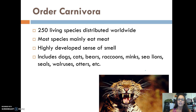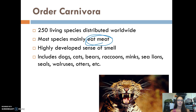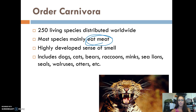Order Carnivora is also distributed worldwide. These are species that eat meat and have a highly developed sense of smell so they can detect their prey. This includes dogs, cats, bears, raccoons, sea lions, mink, seals, walruses, and otters — all considered carnivores.